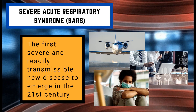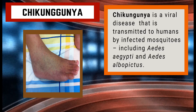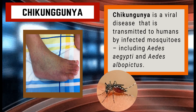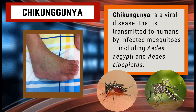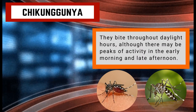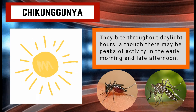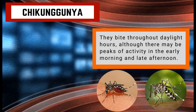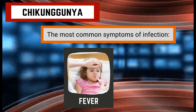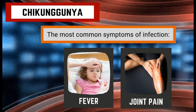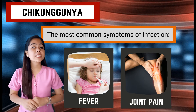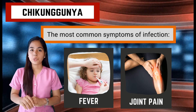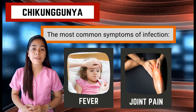Chikungunya is a viral disease transmitted to humans by infected mosquitoes, including Aedes aegypti and Aedes albopictus. These two species can also transmit other mosquito-borne viruses including dengue. They bite throughout daylight hours, although there may be peaks of activity in the early morning and late afternoon. The most common symptoms of infection are fever and joint pain. There is currently no vaccine or specific drug against the virus; treatment is focused primarily on relieving the disease's symptoms.